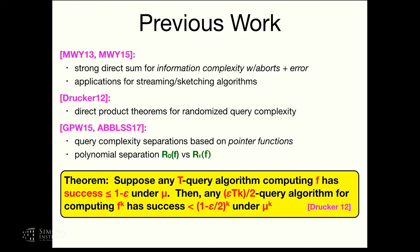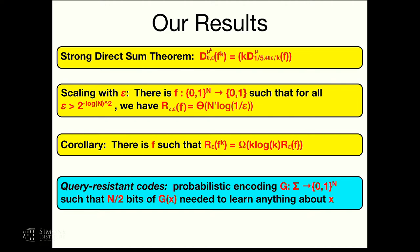This is Drucker's main direct product theorem: if you've got a T-query algorithm with success probability one minus epsilon, then any query algorithm that uses T·K·epsilon queries (maybe with some constant) has exponentially small success probability. This epsilon is important — it needs to be there. The starting point for our research was an open problem of Drucker asking what the query complexity would be if you were allowed little-omega of T times K queries. Our main results include a strong direct sum distributional theorem in terms of errors with aborts, showing that to compute F^k with epsilon error, you need K times the resources of computing one copy with error epsilon over K, with a constant abort probability allowed.